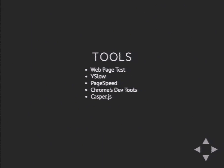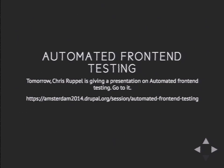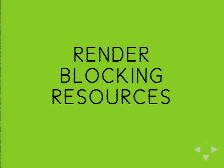Chrome DevTools also has great tools to examine DNS lookups, download times, and what's blocking what. CasperJS does a lot of front-end testing as well. Rather than going into how to use all these tools, tomorrow Chris Ruppel is doing a presentation on automated testing — go to that, it's amazing, and he'll go into all of that and more.